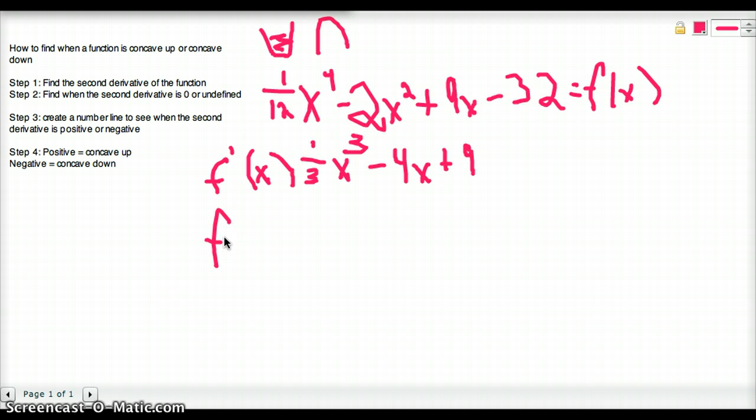Now we just need to find the second. So again, we multiply the coefficient by the exponent and take 1 away from the exponent. We get x squared minus 4.